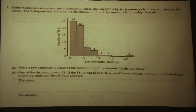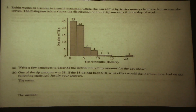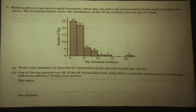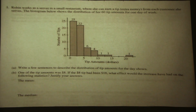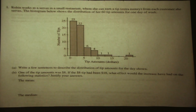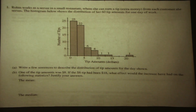The first problem: Robin works as a server in a small restaurant where she can earn a tip — extra money for each customer she serves. The histogram below shows the distribution of her 60 tip amounts for one day of work. Write a few sentences to describe the distribution of tip amounts for the day shown.